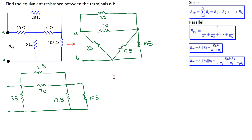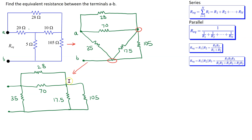Now in this circuit, this is a node and this is a node, and this circuit can be drawn as follows. We stretch out this node, making the 35 ohm resistor like this, then stretch out the end of the 70 ohm and 17.5 ohm resistors, and also this end of the 28 ohm resistor. So this circuit can be redrawn as shown here.